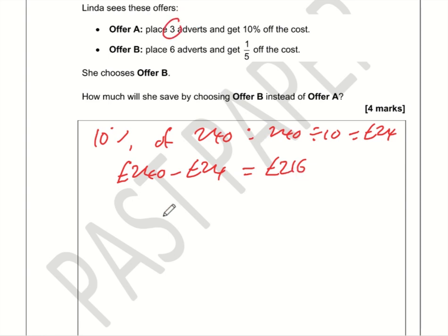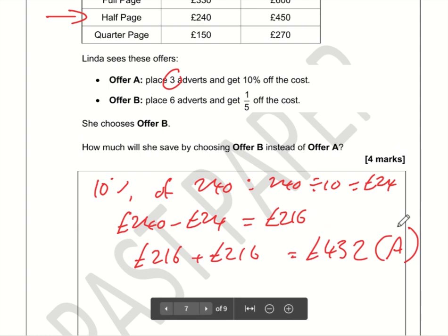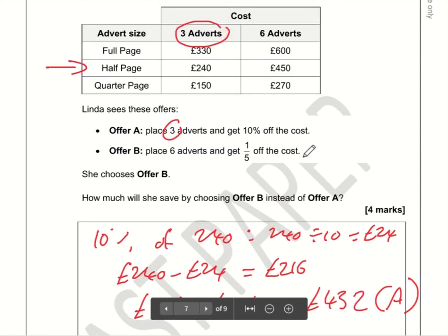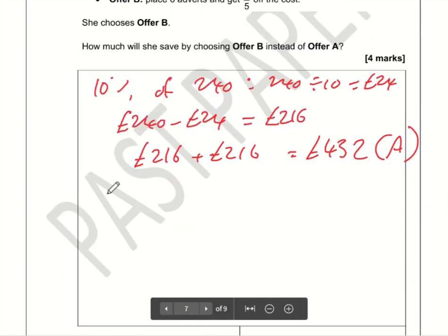Since she's placing six adverts under Offer A, it's £216 plus another £216, which equals £432. That is the total cost under Offer A.